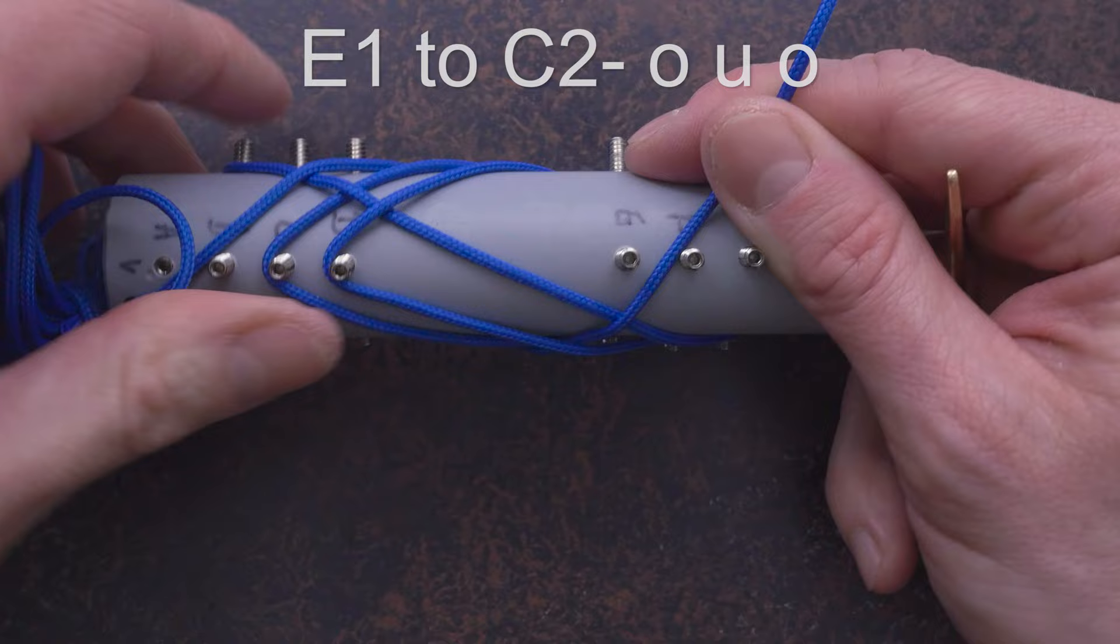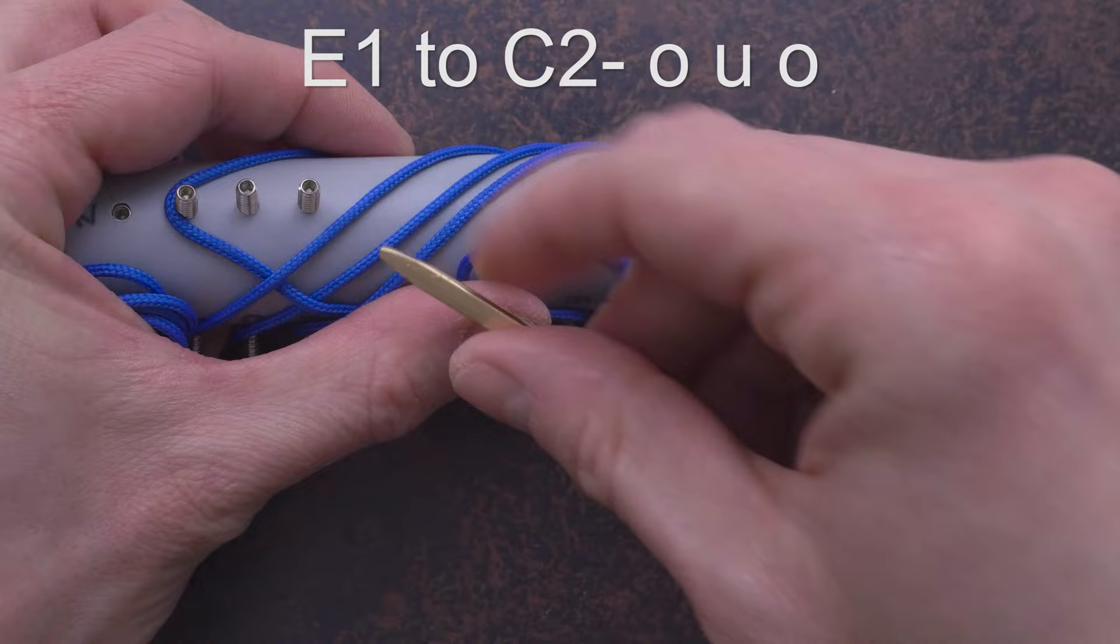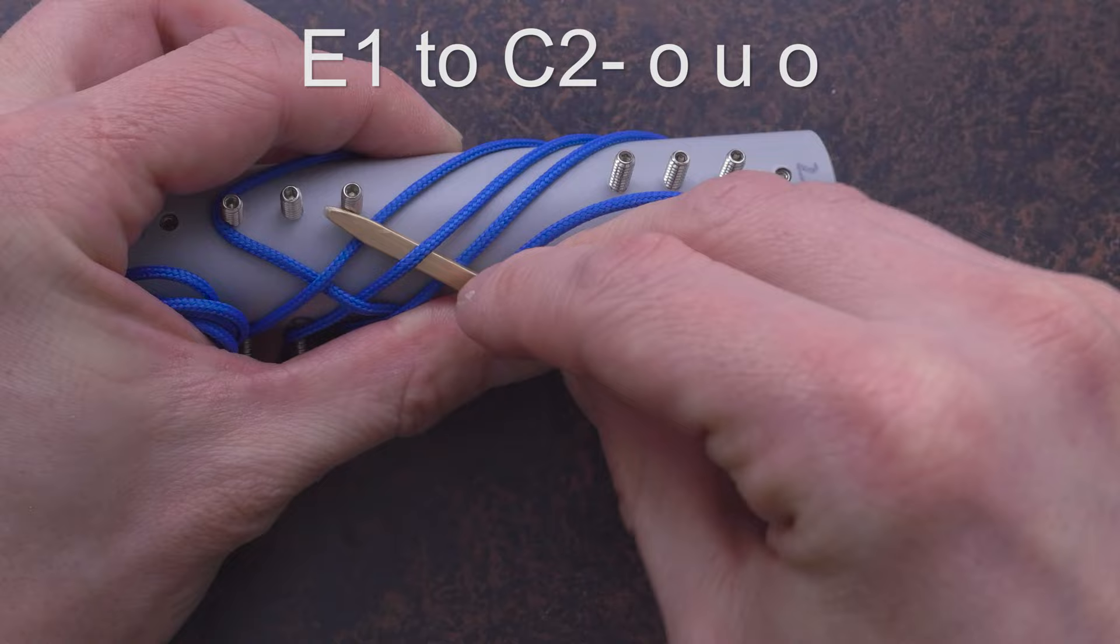From E1, we move to C2, going over, under, over.